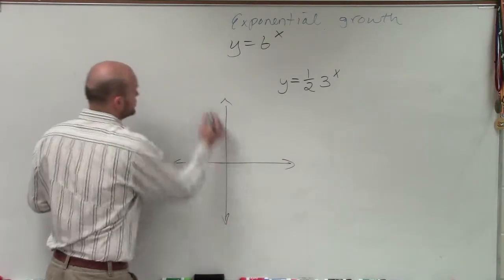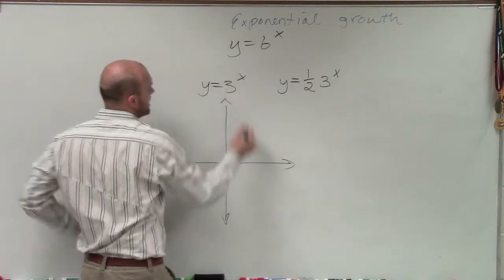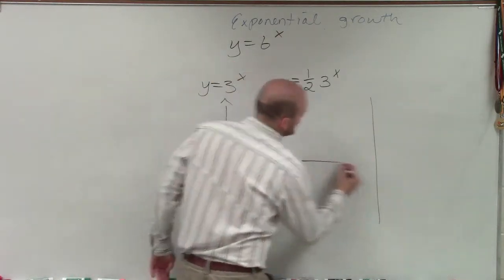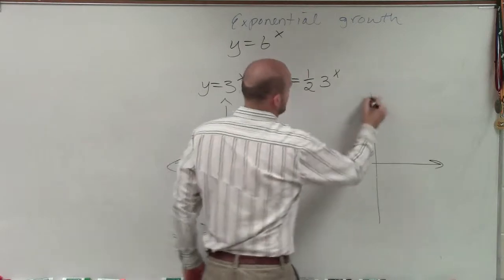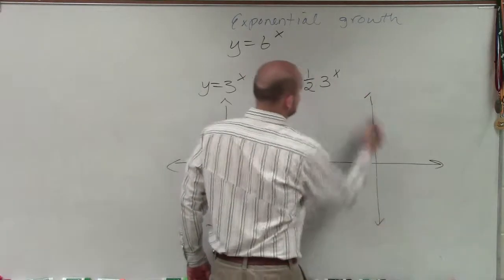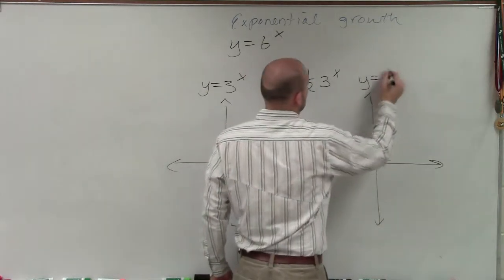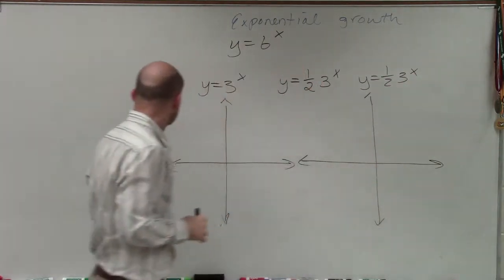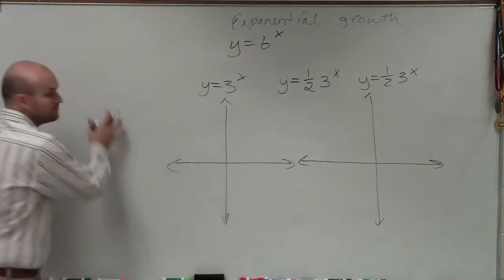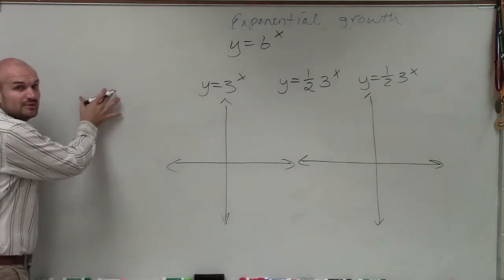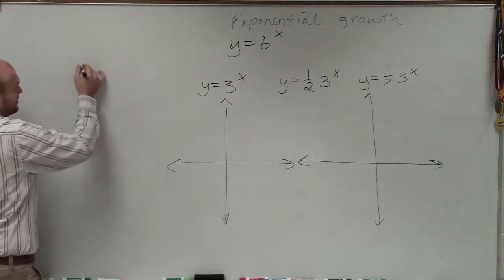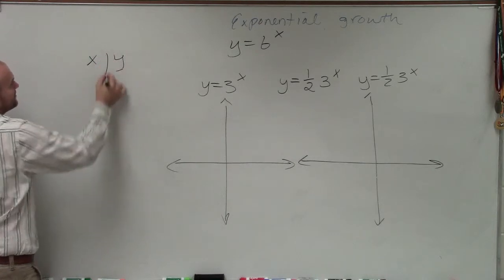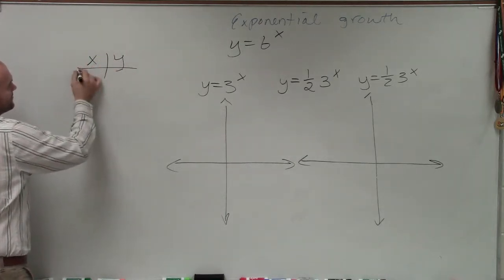I'm actually going to do two different graphs here: y equals 3 to the x, and then the graph we decided to do, y equals one half times 3 to the x. In doing this, we need to make sure we look at a table. Remember when choosing a table, we're just going to have our x and our y values.